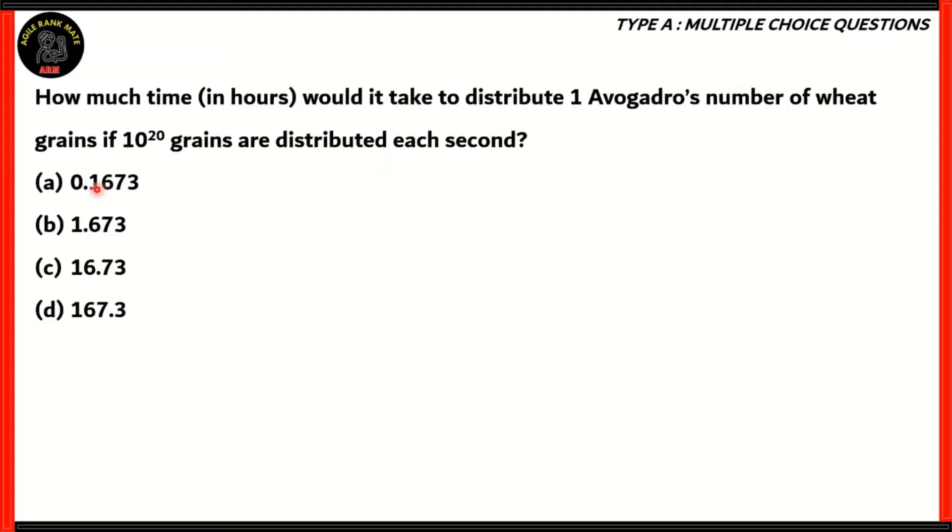Let's start off with our first question. How much time in hours would it take to distribute one Avogadro's number of wheat grains if 10 raised to 20 grains are distributed each second? In this particular question, there is nothing to know about wheat grains. The calculation here is in terms of the mole concept. This is to identify the vastness of Avogadro's number.